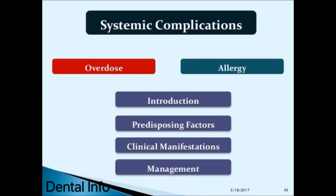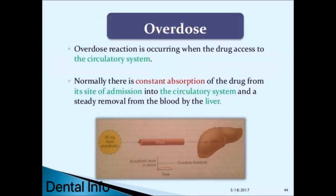Systemic complications: overdose reaction occurs when the drug accesses the circulatory system. Normally there is constant absorption of the drug from its site of administration into the circulatory system and steady removal from the blood by the liver.